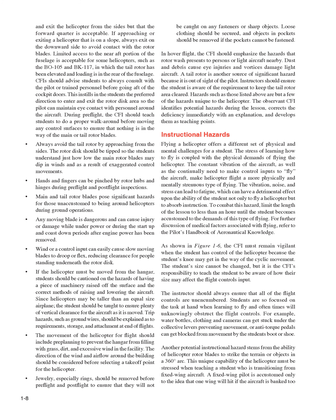Always avoid the tail rotor by approaching from the sides. The rotor disc should be described so students understand just how low the main rotor blades may dip in winds and as a result of exaggerated control movements. Hands and fingers can be pinched by rotor hubs and hinges during pre-flight and post-flight inspections. Main and tail rotor blades pose significant hazards for those unaccustomed to being around helicopters during ground operations. Any moving blade is dangerous and can cause injury or damage while under power or during the start-up and coast-down periods after engine power has been removed. Wind or a control input can easily cause slow-moving blades to droop or flex, reducing clearance for people standing underneath the rotor disc. Trip hazards such as ground wires should be explained as to requirement, storage, and attachment at end of flights.